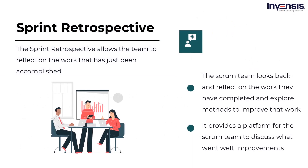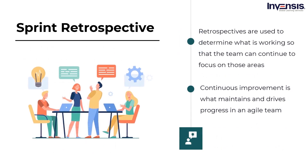The Sprint Retrospective is the last Scrum ceremony on the list. It allows the team to reflect on the work that has just been accomplished and identify areas for improvement. Following the Sprint Review, the Scrum team should look back, reflect on the work they have completed, and explore methods to improve. The Sprint Retrospective provides a platform for the Scrum team to discuss what is going well, what may be improved, and ideas for improvement. The teams can discuss what went and did not go well in the previous sprint and what could be done differently. Retrospectives are used to determine what is working so the team can continue to focus on those areas, find out what isn't working, and come up with innovative alternatives and a plan of action. Continuous improvement is what maintains and drives progress in an Agile team, and retrospectives play an important role in that.